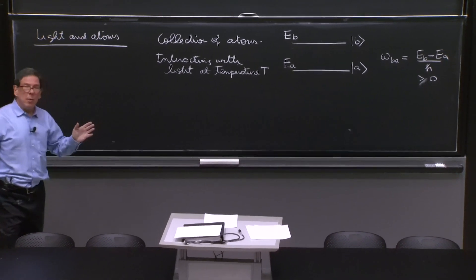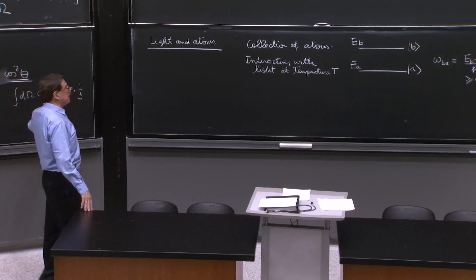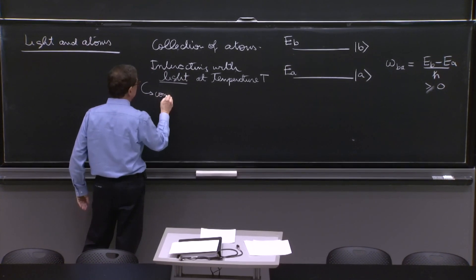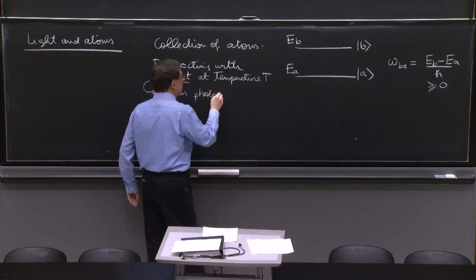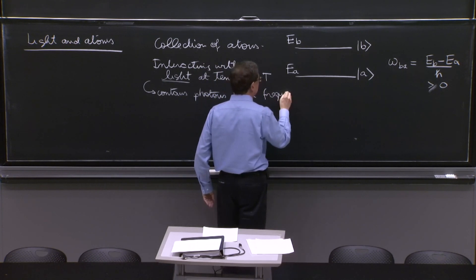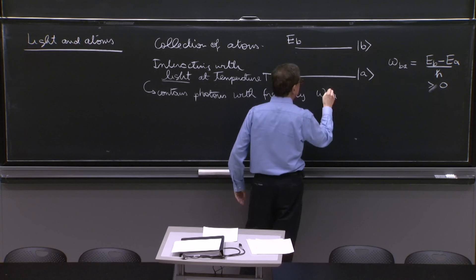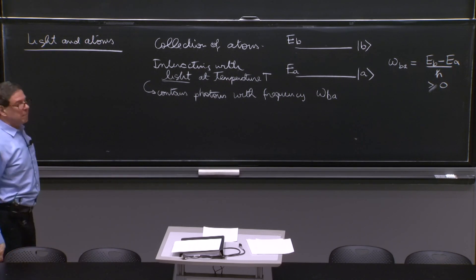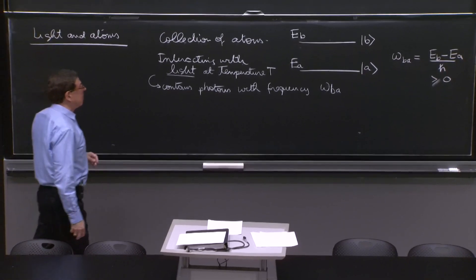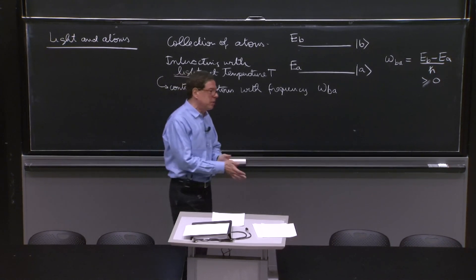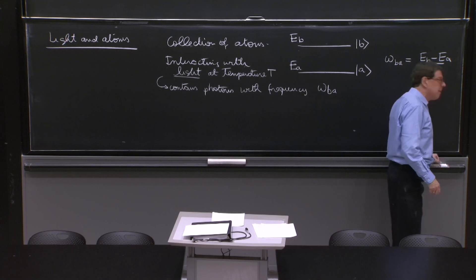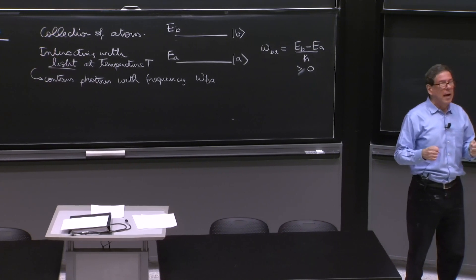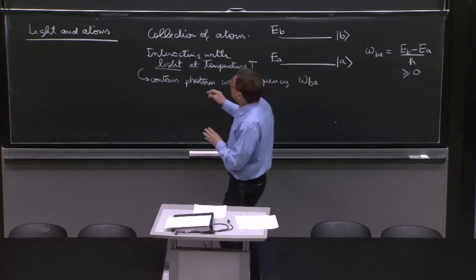So the question we ask is, what happens to these atoms when light shines? And in particular, suppose the light contains photons with frequency omega BA. That's the frequency associated with the transition. So what will happen? And basically, a couple of things can happen. These are things we already know from time dependent perturbation theory. And surprisingly, as we will see, Einstein, when he went through his argument that we're going to go through soon, came with a different angle and saw things a little differently.